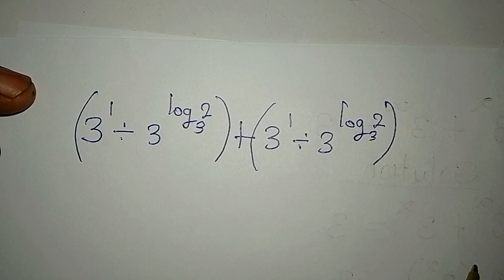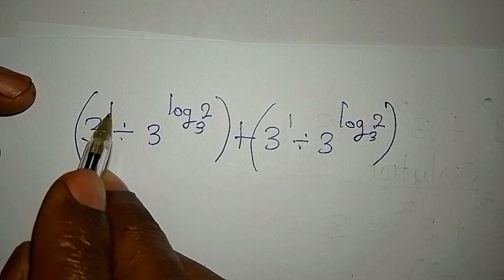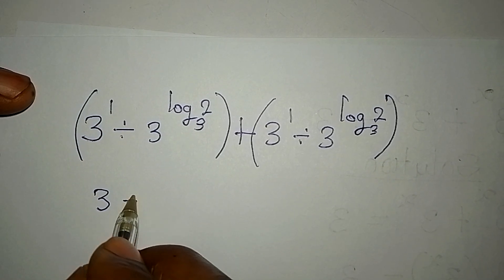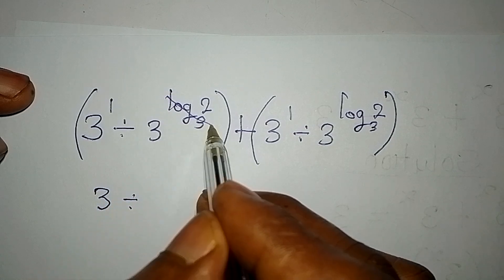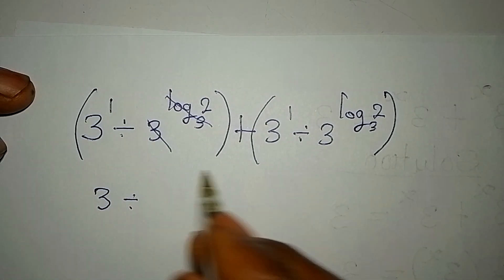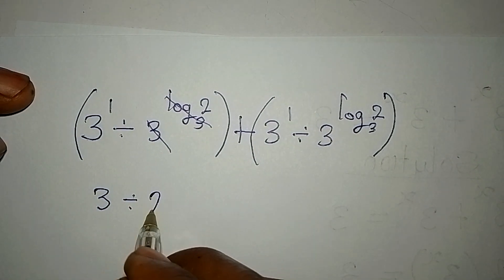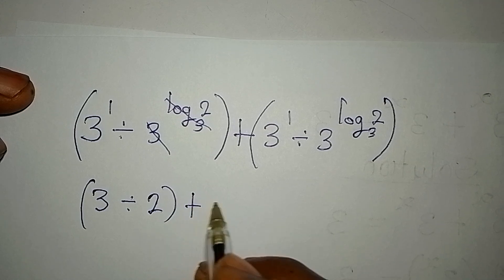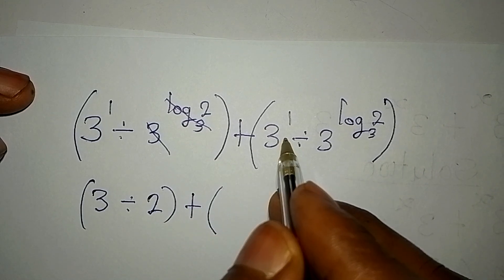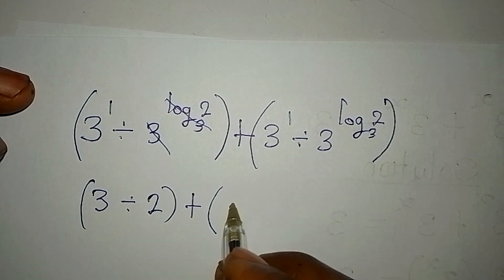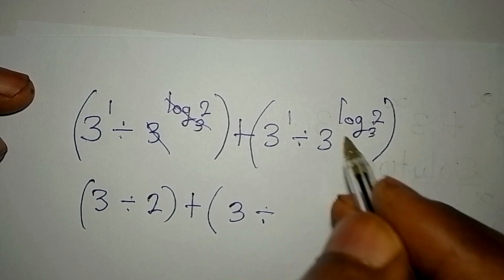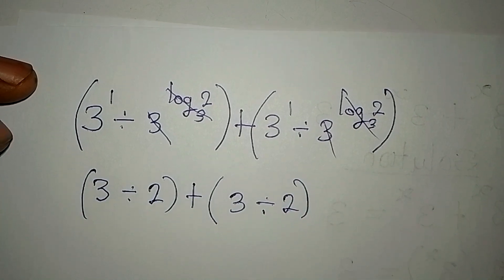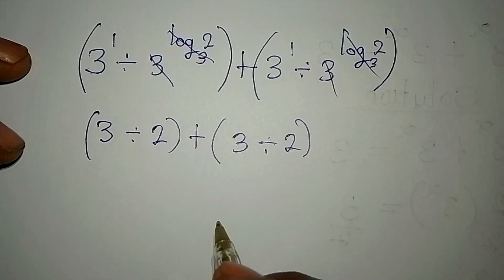Okay, so let's continue from here. 3 to the power of 1 is 3, then divided by — now log 2 to base 3 will cancel this — so we'll have this divided by 2. Then plus, from the brackets, this is 3 again divided by this, and this will cancel, so we divide by 2.